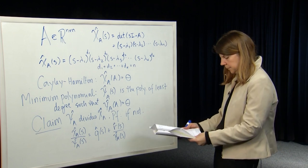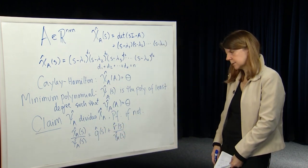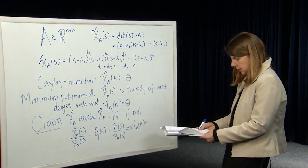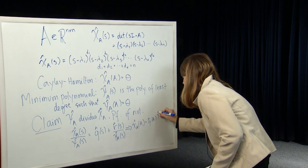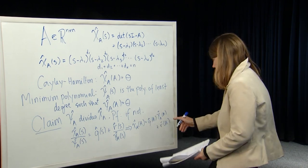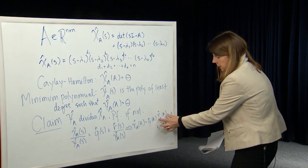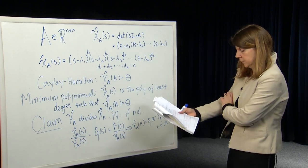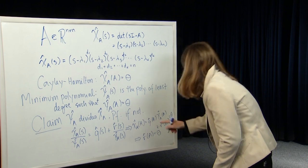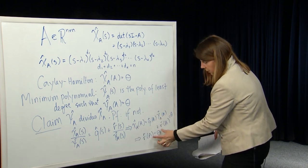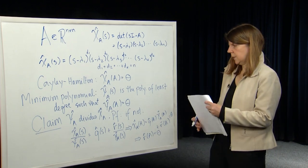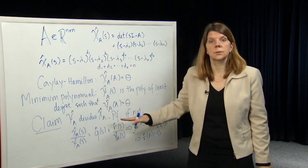Now we derive a contradiction: multiplying out by ψ̂_A(s) and evaluating at A gives χ̂_A(A) = q̂(A)·ψ̂_A(A) + r̂(A). By Cayley-Hamilton the left side is zero; ψ̂_A(A) = 0 by definition; and we assumed r̂(A) ≠ 0. But that forces r̂(A) = 0, which is a contradiction. So the minimum polynomial must divide the characteristic polynomial perfectly.